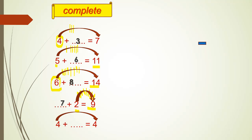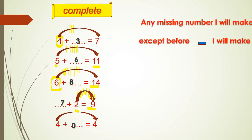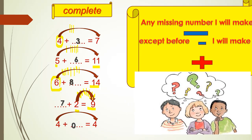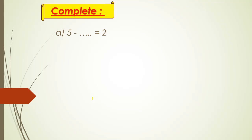Don't forget: any missing number I will do minus, except before and minus — before and minus, I will make plus. Next exercise: five minus what equals two. Any missing number I will make minus — except before and minus. Here the missing number is not before a minus, so I count after the smallest to reach the greatest.